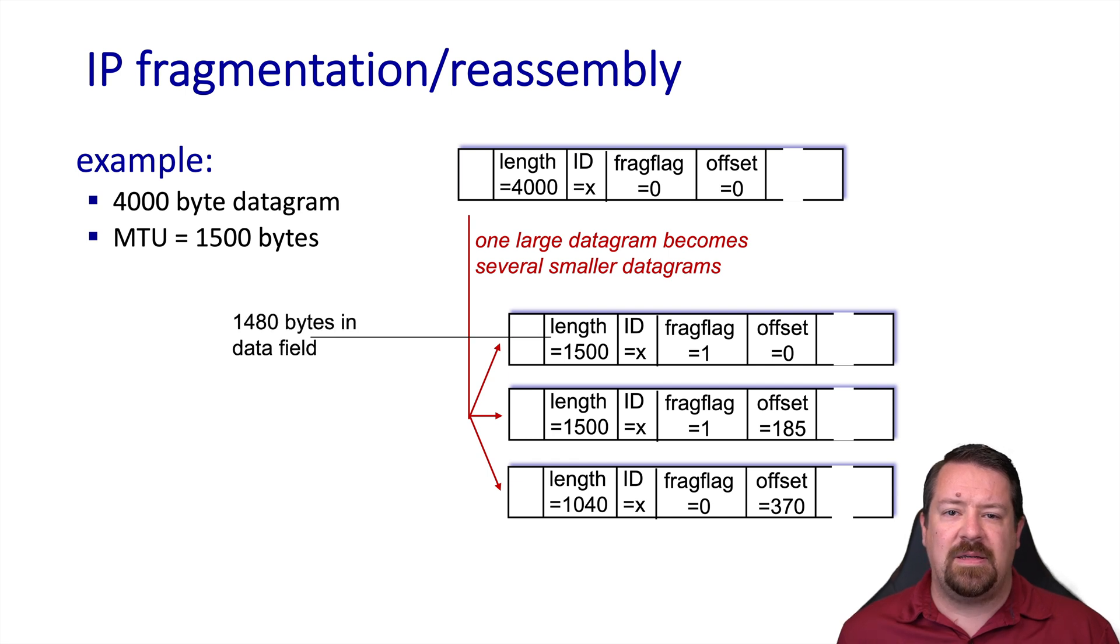Note that the length is the entire packet length so it includes the header size, 20 bytes with no IP options and 1480 bytes of data. Our offset for the second packet tells us how many bytes back from the start of the original packet the second fragment starts.